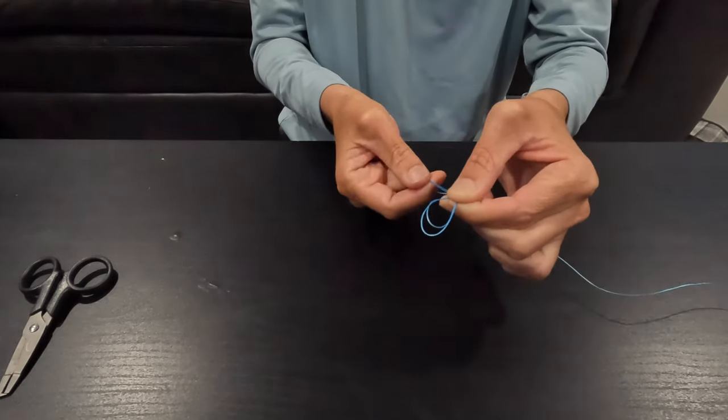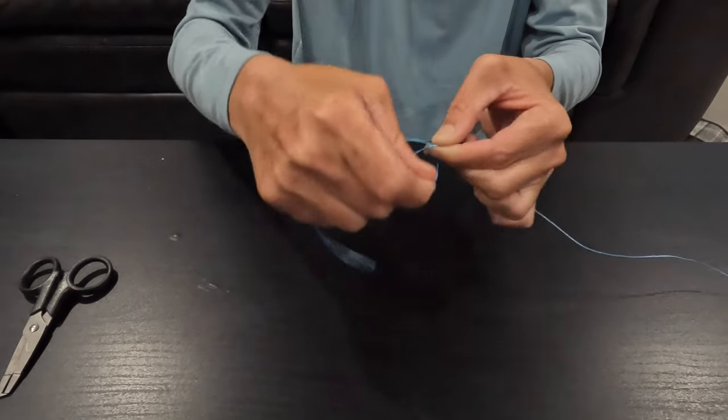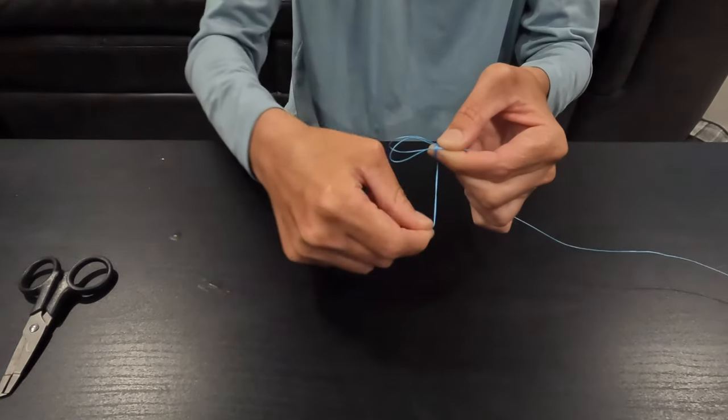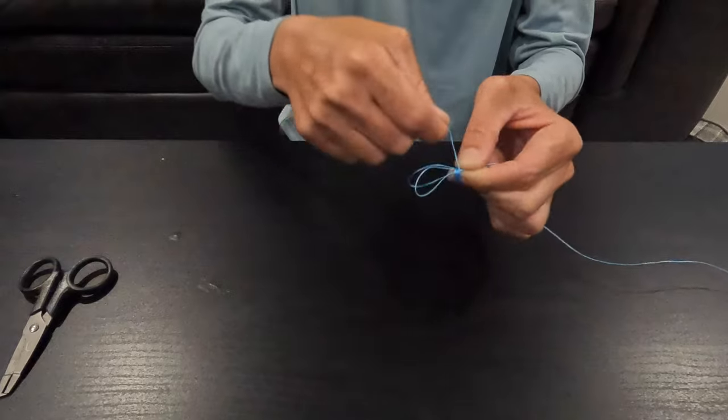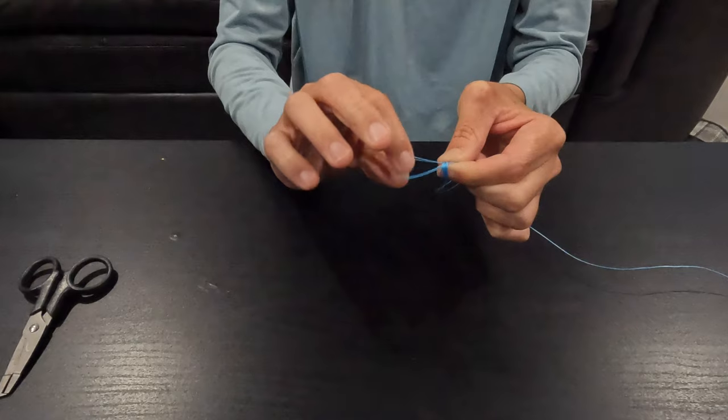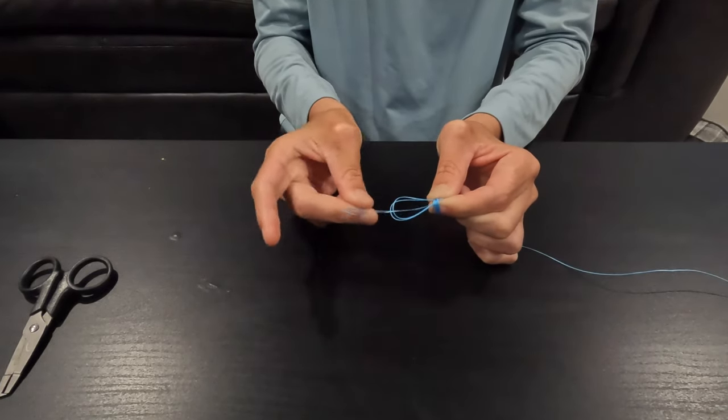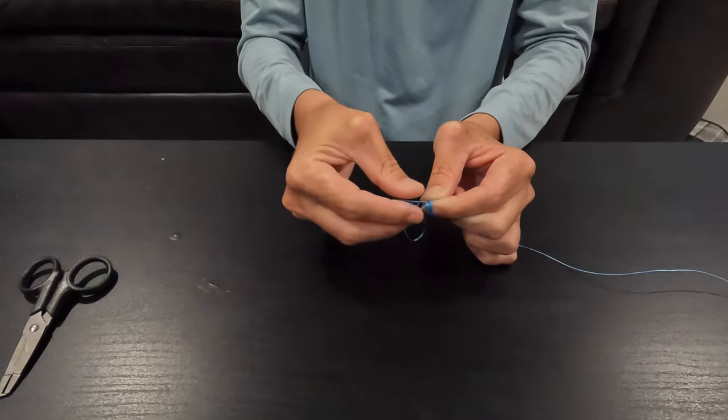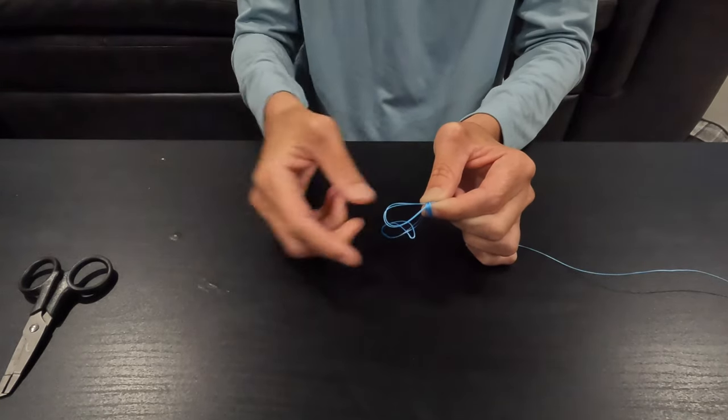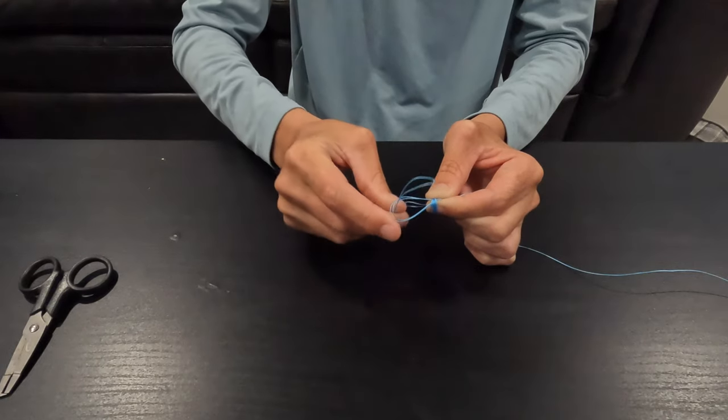And then you're going to take your remaining line and you're going to go over your index finger four times. So it's two, three, four. Now you've got the little loop that we originally made and you're going to take your bigger loop and stick it into the little loop. And let me do that again for you. We're just going to put it through and pull tight.